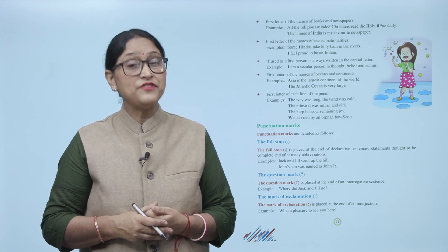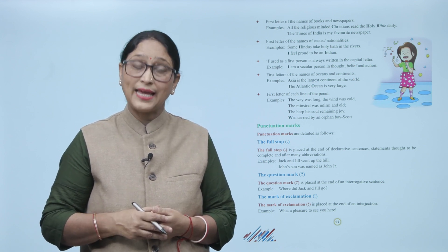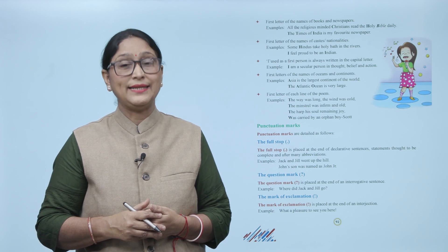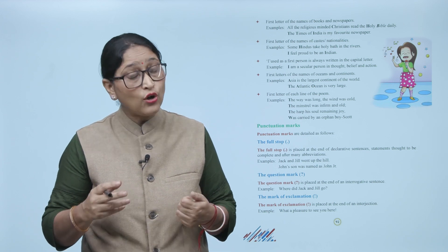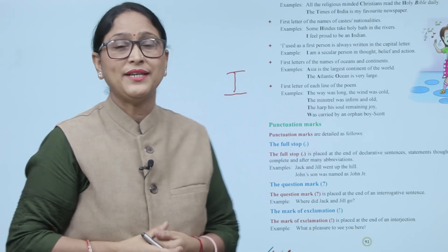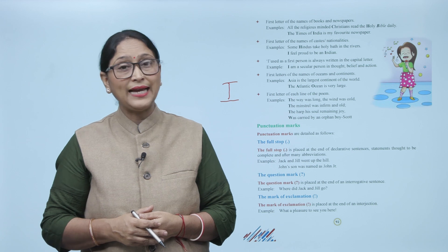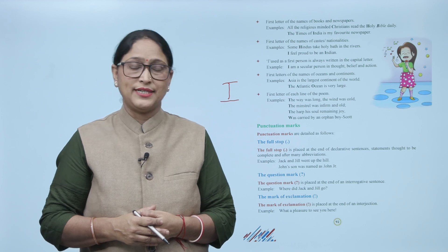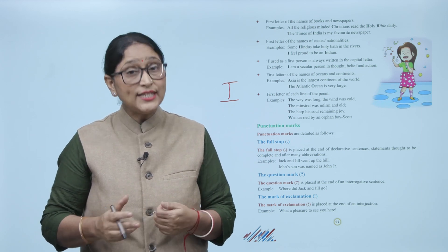Eighth: the first letter of the names of castes and nationalities is written in capital. Examples: 'Some Hindus take a holy bath in the river.' 'I feel proud to be an Indian.' Ninth: the pronoun 'I' used as a first person is always written as a capital letter. Example: 'I am a secular person in thought, belief, and action.'